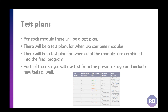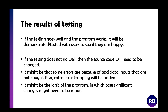If the testing goes well and the program works, you show it to the users and they'll see if they're happy with the result. If it does not go well, you've got to go back and put extra error trapping in. It might even be a case where the actual program just doesn't work how you wanted it to. I remember once I was making a game — I actually have a video of it on my channel — where you've got a bunch of ants that have to eat a pie in the middle of a picnic.